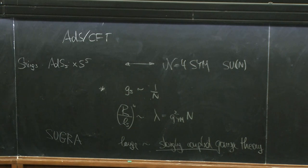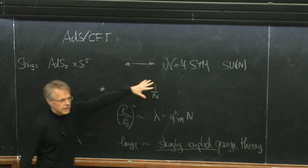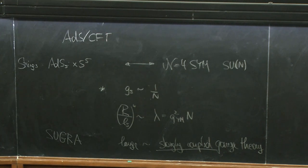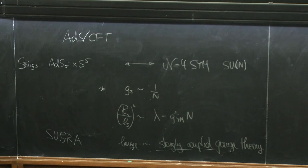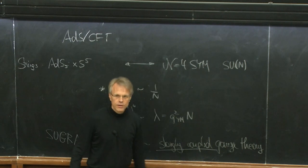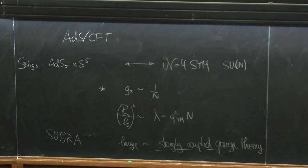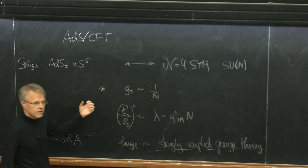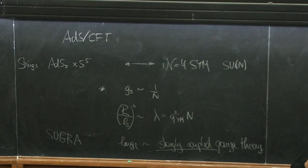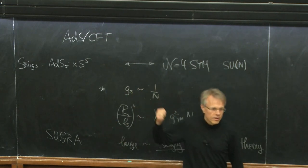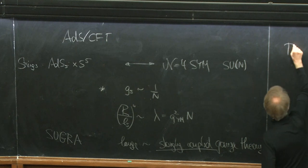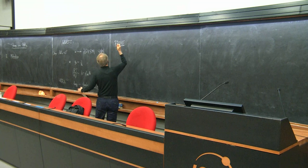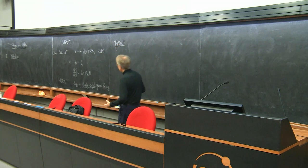If you are a skeptic, someone telling you this is true may not be enough — you'd like to understand it more conceptually, to in some sense derive this duality. Part of the motivation is that there are many versions of AdS/CFT, not just AdS5 × S5 to N=4 super Yang-Mills; people have tried to apply it to condensed matter systems and more. You'd like to understand which features are essential and which are accidental.